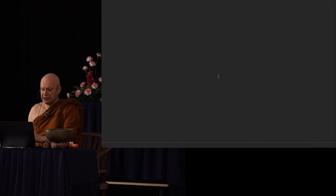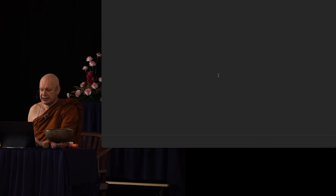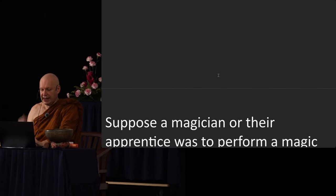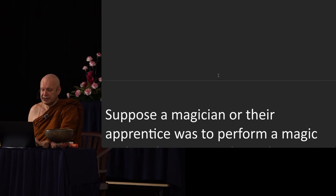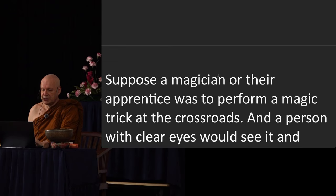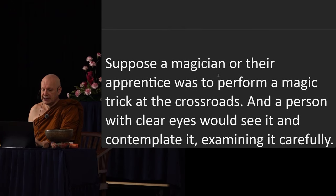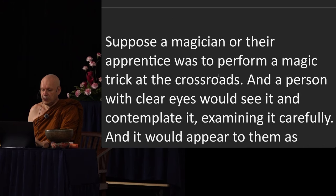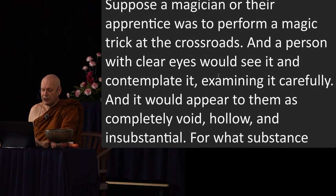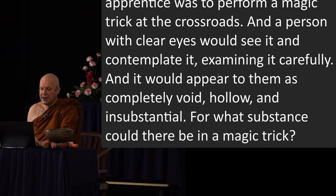So now we come to the very last of the five khandhas — the Vinyana khanda. This is the consciousness, the knowing, or the awareness. Suppose a magician or their apprentice was to perform a magic trick at the crossroads. A person with clear eyes would see it and contemplate it, examining it carefully. And it would appear to them as completely void, hollow, and insubstantial. For what substance could there be in a magic trick?